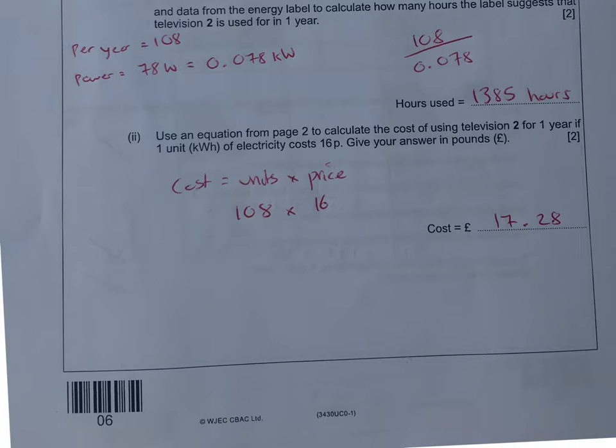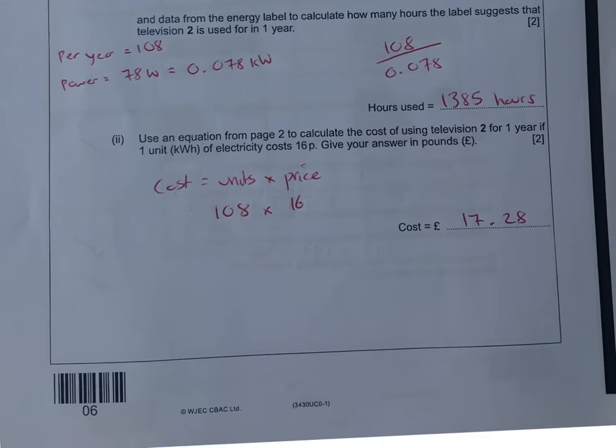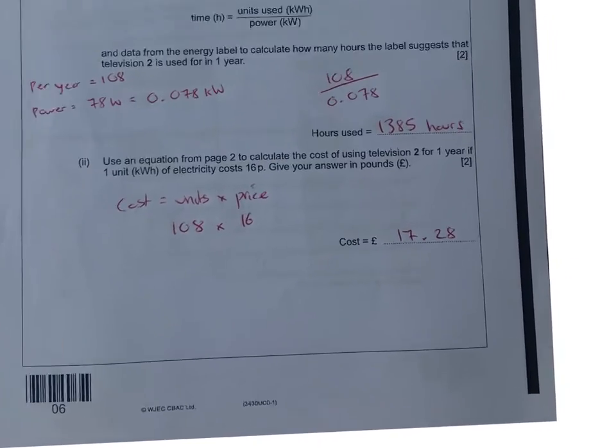Once we do that, we can come out with 1,385 hours. Then using equation 2, so that's going to be cost. These two equations come together. We've got the number of units now, which is 108, and then the price per unit is 16 pence. A fairly straightforward calculation to give you £17.28. Make sure you put it in pounds because that's what they're looking for.